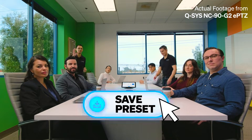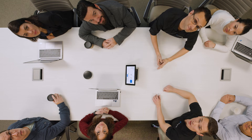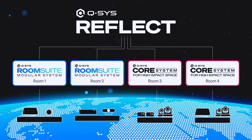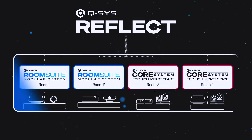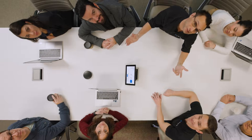And when it comes to scaling your settings to your other meeting rooms, it's as simple as saving that preset and deploying it to your other room suite modular rooms via the cloud using Q-SYS Reflect. When you connect room suite modular systems to Q-SYS Reflect, it automatically pushes control and data to the cloud, letting you remotely monitor and manage all of your high-performance workplaces from one place. And that's room suite.